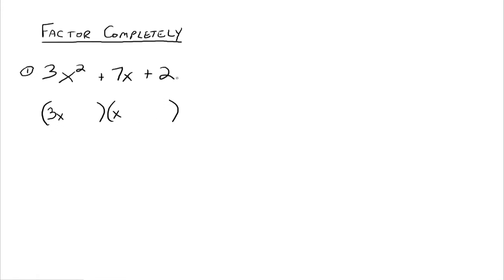The constant term also comes from the product of the last two parts of the binomials, and in this case they have to multiply up to 2. So your options are 1 and 2. We could put a 2 in one and a 1 in the other. Since this last sign is a plus, these two signs in the binomials are going to have to be the same sign — both positive or both negative.